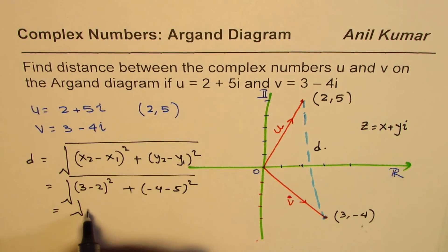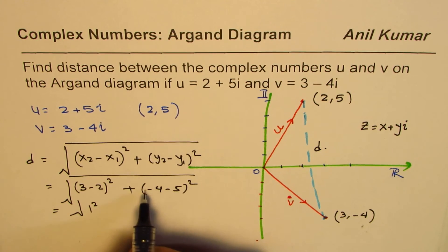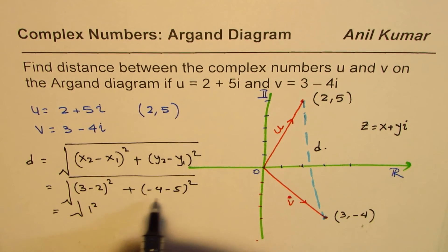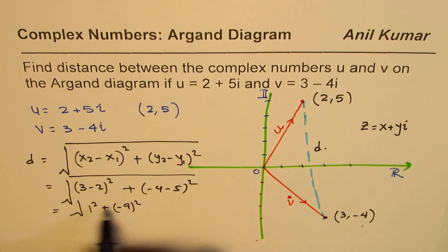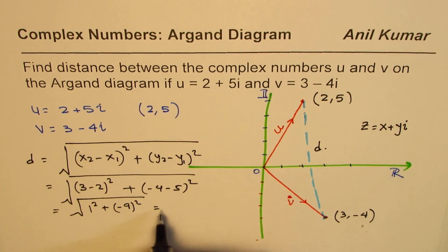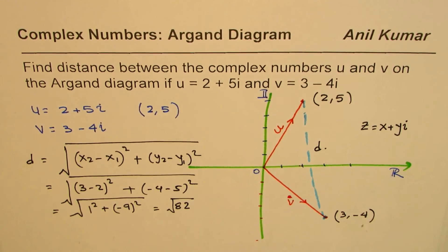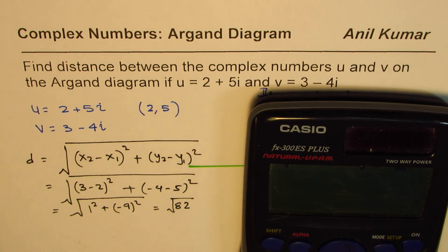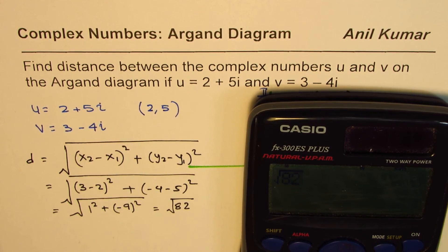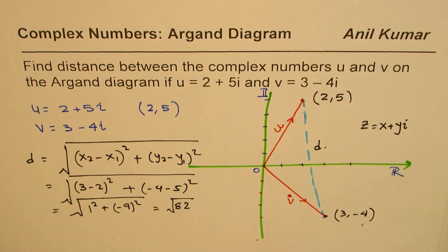And this should be equal to square root of 1 square which is 1, and this is plus minus 9 square which is 81. So we get square root of 82 as our answer. Square root of 82 is the answer, which you could convert in decimals if you want to. Square root of 82 equals in decimals 9.05.